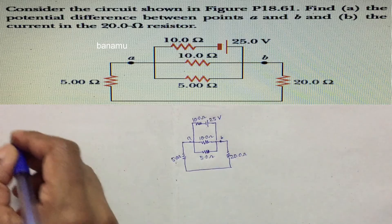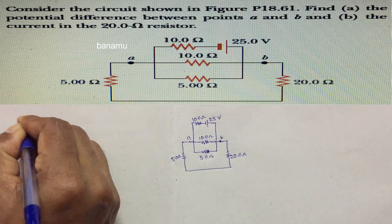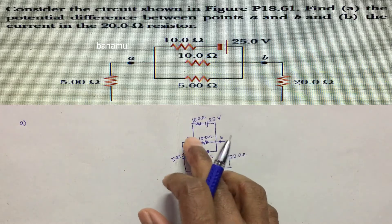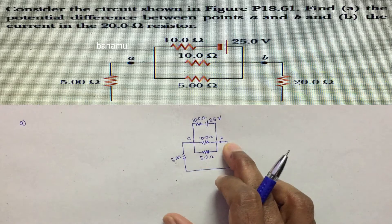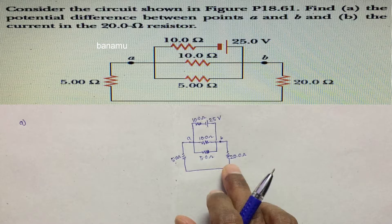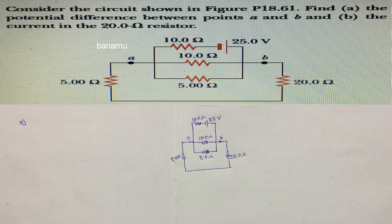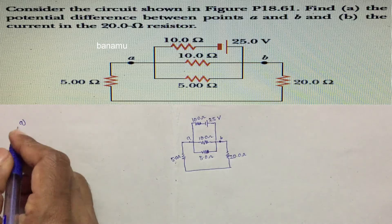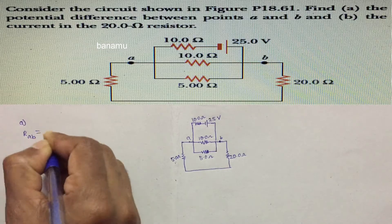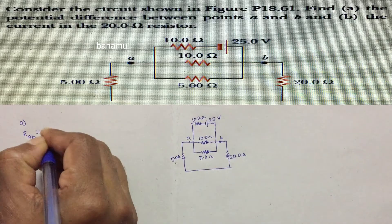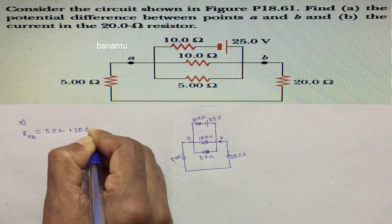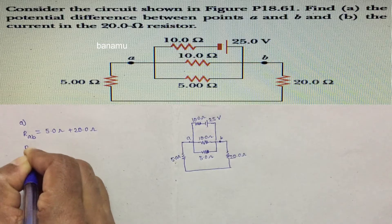First, for part A, we calculate the potential difference between points A and B. The 5 ohm resistance and 20 ohm resistance are connected in series. The equivalent resistance R_ab equals the sum of the individual resistances: 5 ohms plus 20 ohms, so R_ab equals 25 ohms.